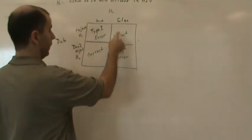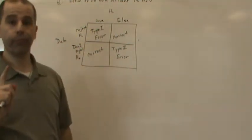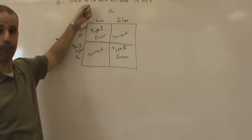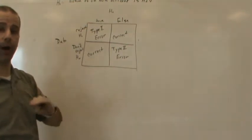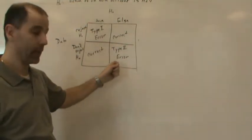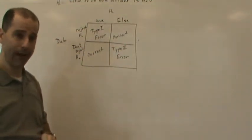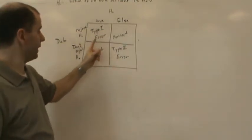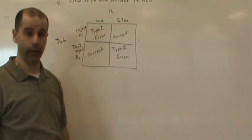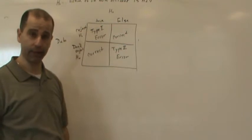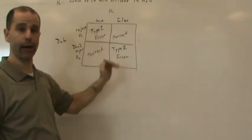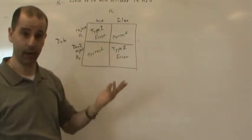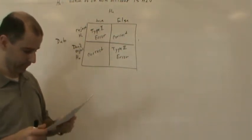The other error: the null is false and we fail to reject it — the patient really doesn't have HIV but we assume he does. In that case, no harm is done to the doctors; they're just taking precautions when they don't need to. So in this scenario, the Type I error is much worse to make than the Type II error. Different circumstances determine which error is the more severe one.